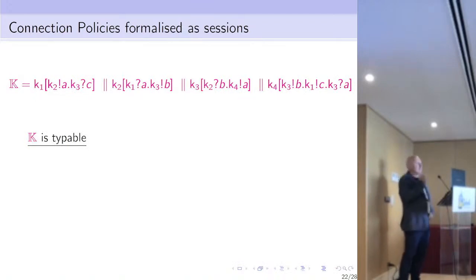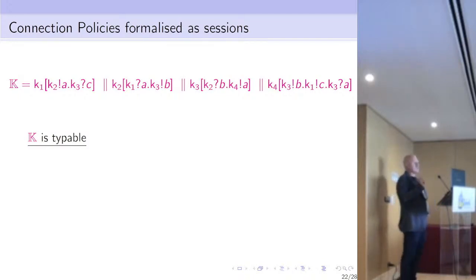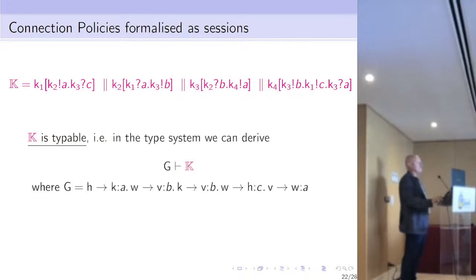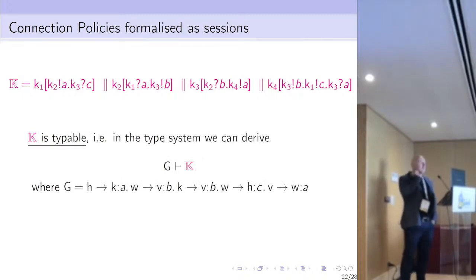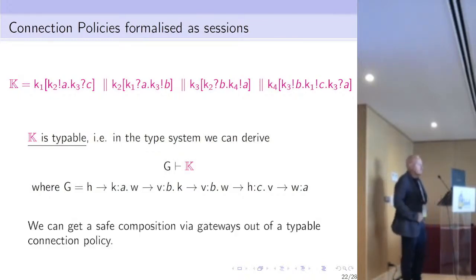In the example, the connection policy can be described as a multi-party session with four participants, since we have four systems and for each system we choose a particular component to act as an interface. For this specific session we can prove that the session is typeable — that is, in the type system we can derive that the connection policy K can be typed by a global type where H sends to K A, W sends to V B, and so on.